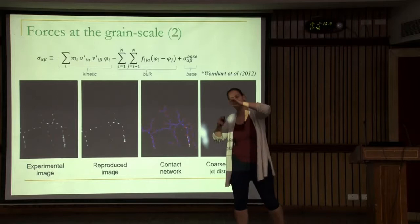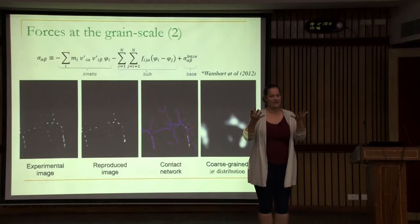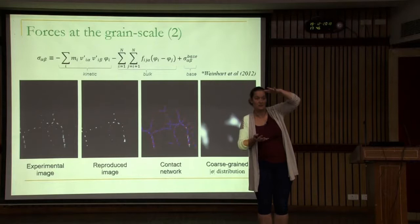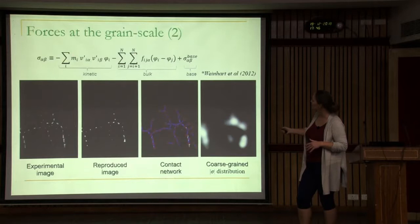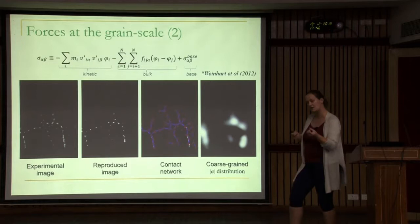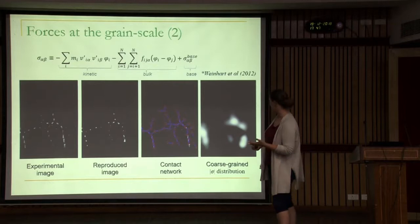For particles avalanching down the chute, there are different types of contributions to the force: a force from the base, a force due to collisions, and a force due to hydrostatic pressure. So we have the kinetic contributions from collisions, the bulk which is the hydrostatic pressure, and the base. When we looked at the three different components, we noticed that the bulk one is the most dominant. The kinetic and base contributions are about an order of magnitude smaller.